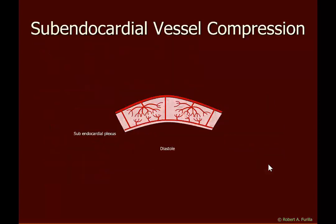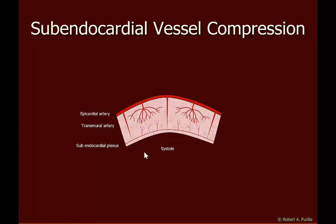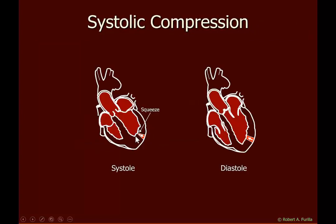Let's talk about that vessel compression. Looking at the vessels, we have the epicardial arteries, transmural arteries coming down, and then the sub-endocardial plexus of blood vessels. During systole, the sub-endocardial region becomes compressed, restricting blood flow to the myocytes. This sub-endocardial compression creates a squeeze that may actually push blood back up to the epicardial region. Because the sub-endocardial region is no longer receiving blood supply, it relies on myoglobin oxygen stores to supply the muscles with the oxygen needed to maintain contraction.